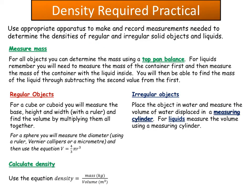One of the required practicals was about density: to use appropriate apparatus to make and record measurements needed to determine the densities of regular and irregular solid objects and liquids. Since density equals mass over volume, if you want to calculate the density of something, you first need to work out the object's mass and then its volume.